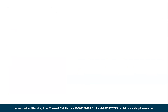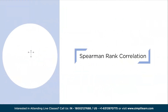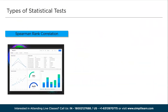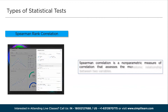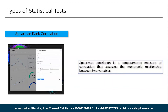Now moving ahead, at the sixth position, we have Spearman rank correlation. The Spearman rank correlation is a non-parametric measure of correlation that assesses the monotonic relationship between two variables. It is suitable for variables that may not have a linear association.